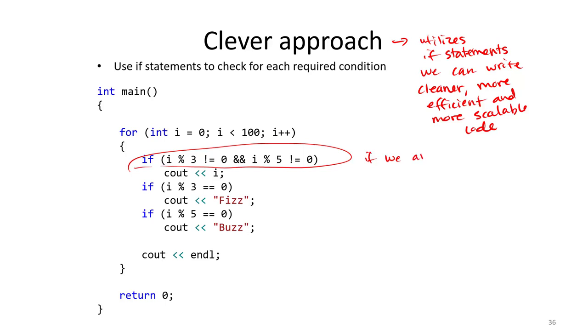If we are not multiples of 3 or 5. Notice, again, we're using modulus here to check for multiples. If I divided by 5 doesn't have a remainder, then we know that we can check for multiples. So here, if we're not a multiple of 3 or 5, then we output the number.